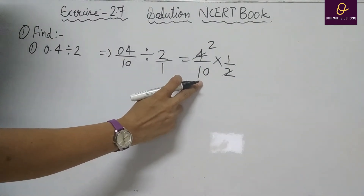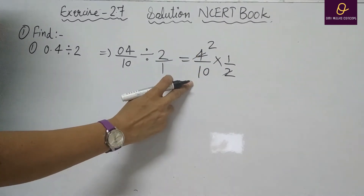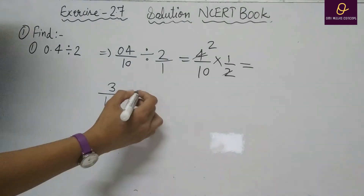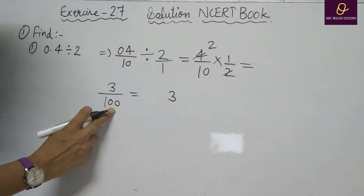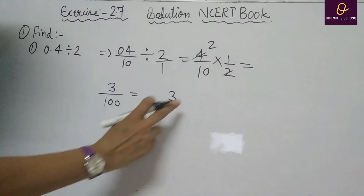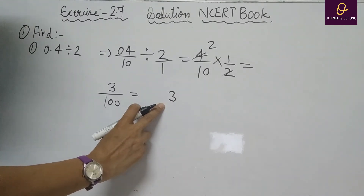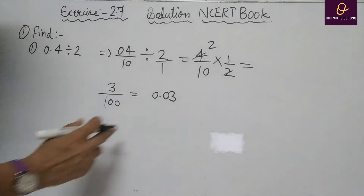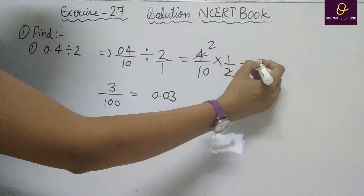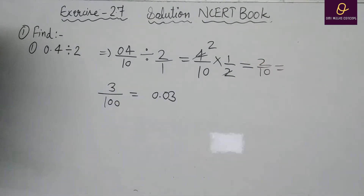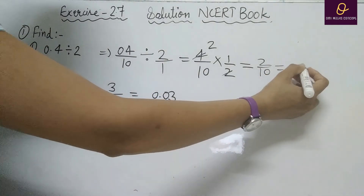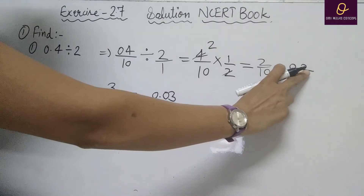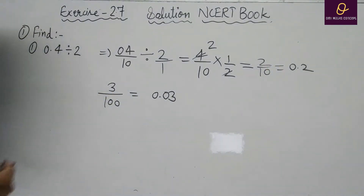Now, when the denominator is 10, 100, or 1000, you place the decimal accordingly. For example, 3 divided by 100 — there are two zeros, so you put the decimal after 2 digits from the right-hand side, giving 0.03. Similarly, 2 by 10 gives 0.2 — one zero means decimal after one digit. Let's look at part B now.